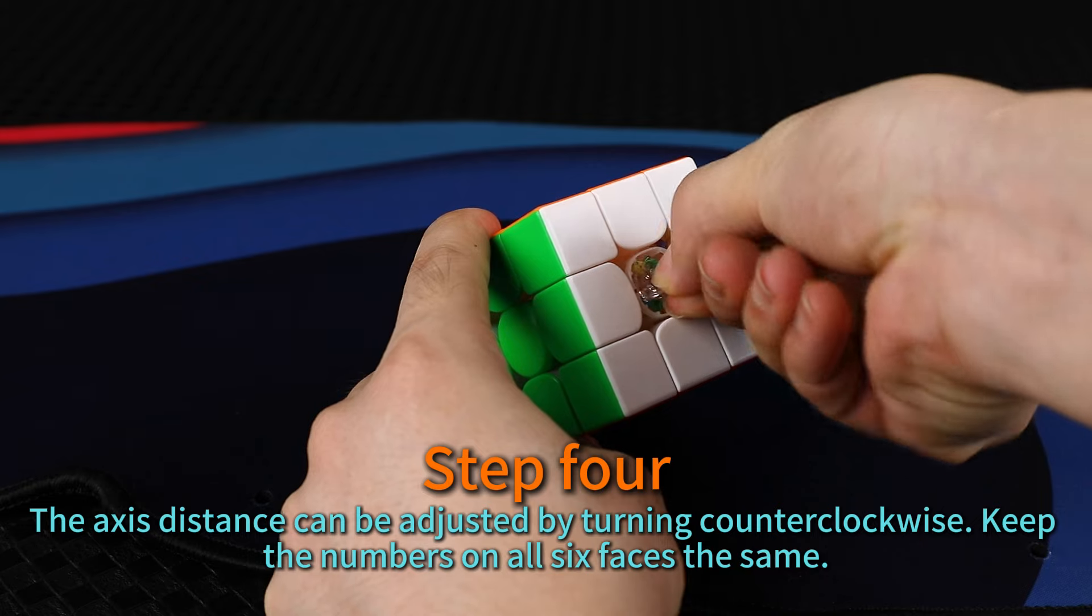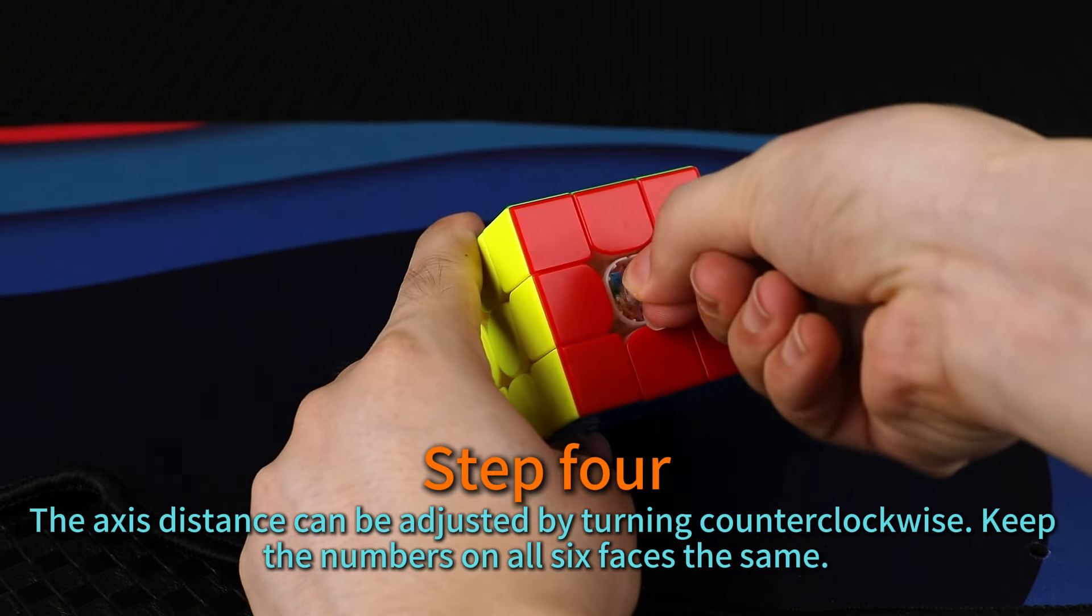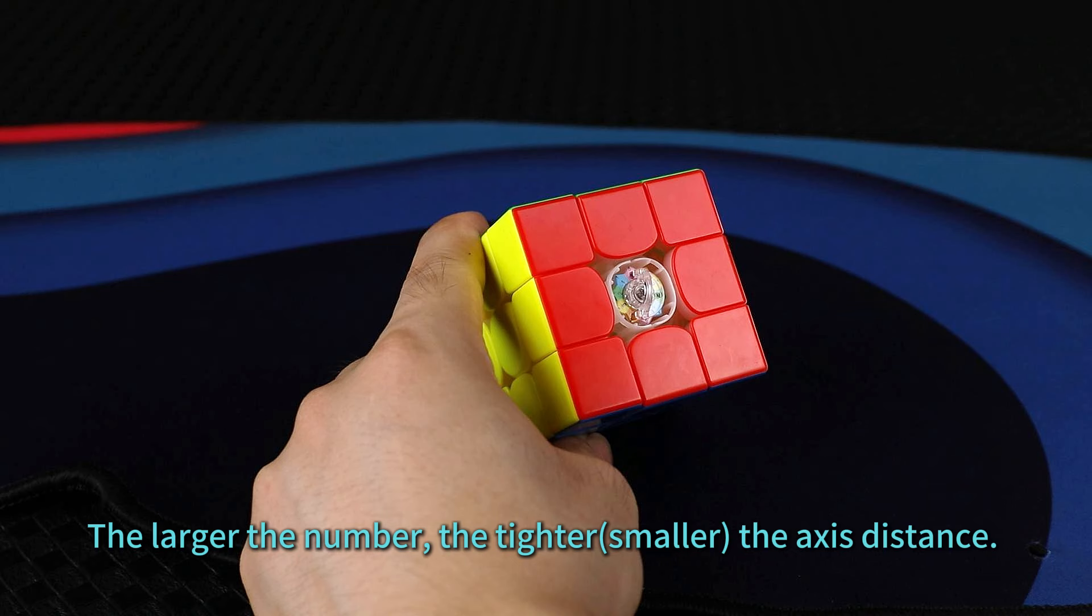Step 4. The axis distance can be adjusted by turning counterclockwise. Keep the numbers on all six pieces the same. The larger the number, the smaller the axis distance.